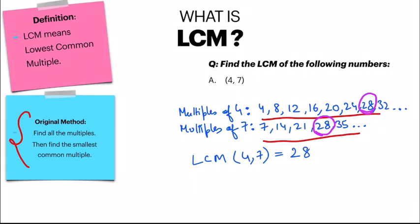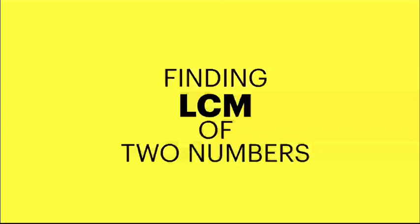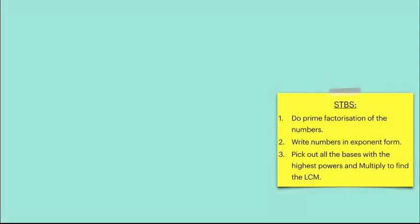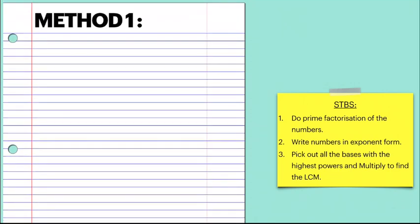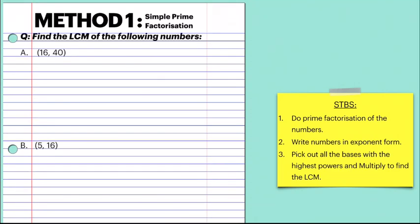Now in grade 7, we will do it by prime factorization method. We studied about prime factorization in the previous lesson and about exponents in today's lesson. We are using both prime factorization and exponent method to solve LCM. This is what we are learning in grade 7. The first method is the simple prime factorization method.